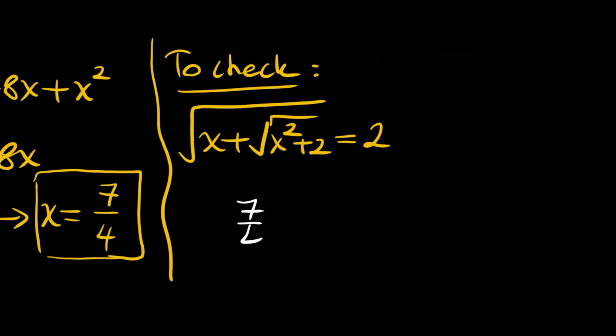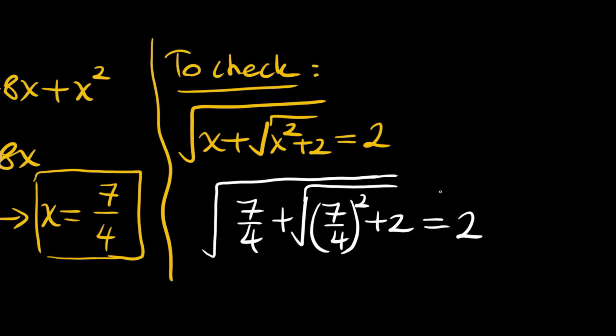Square root of 7 over 4 plus square root of 7 over 4 squared plus 2, all under the square root, should equal 2.